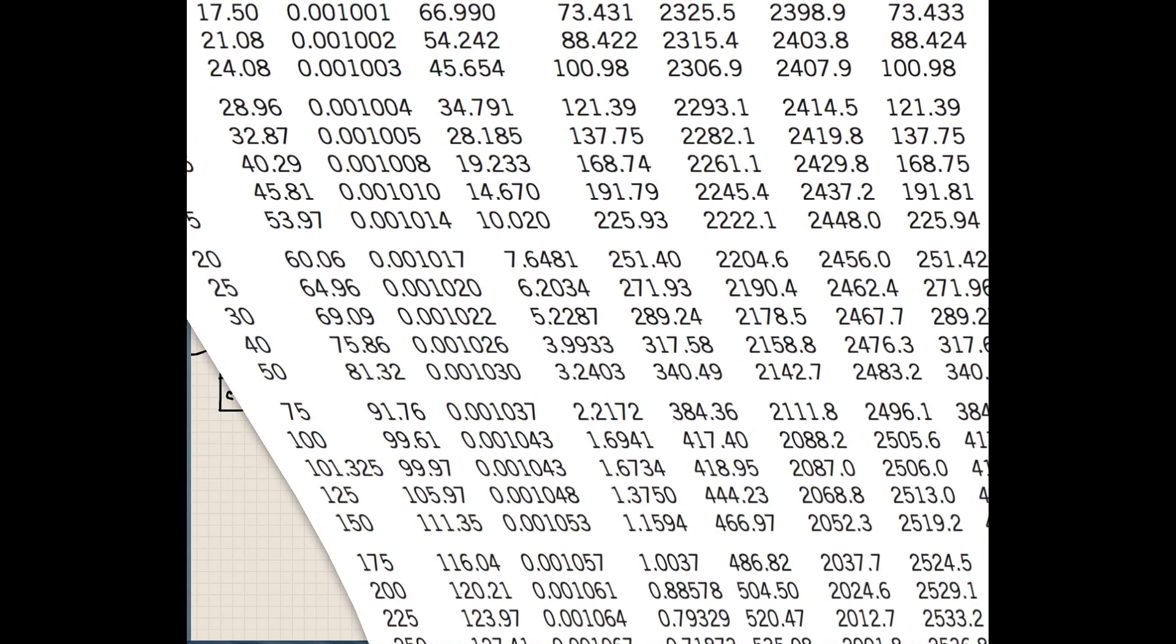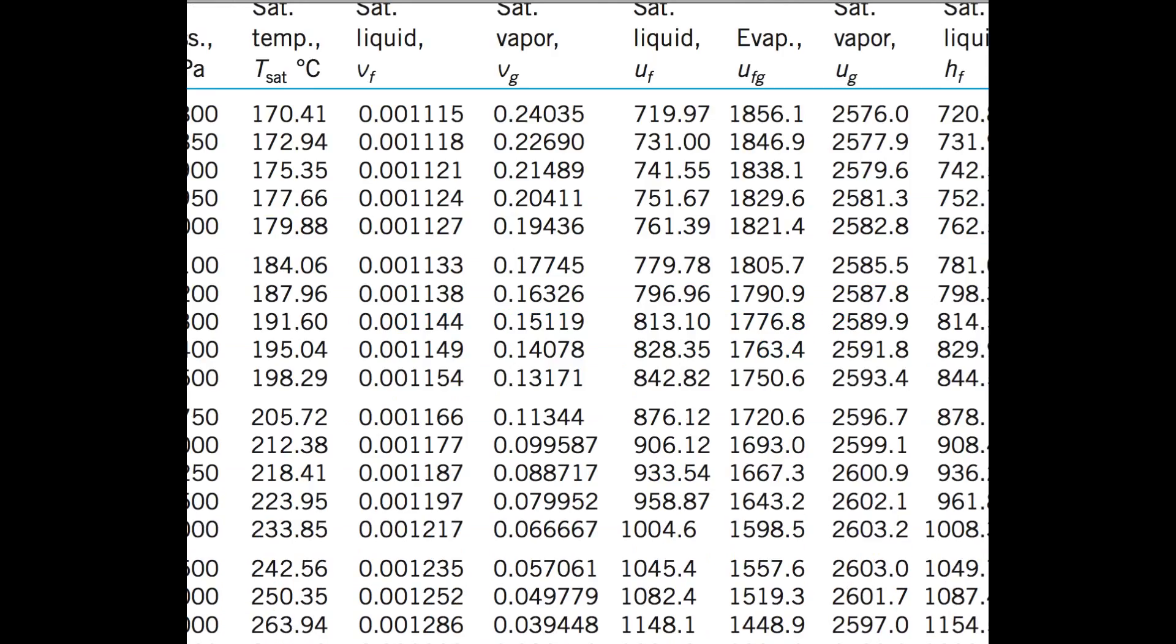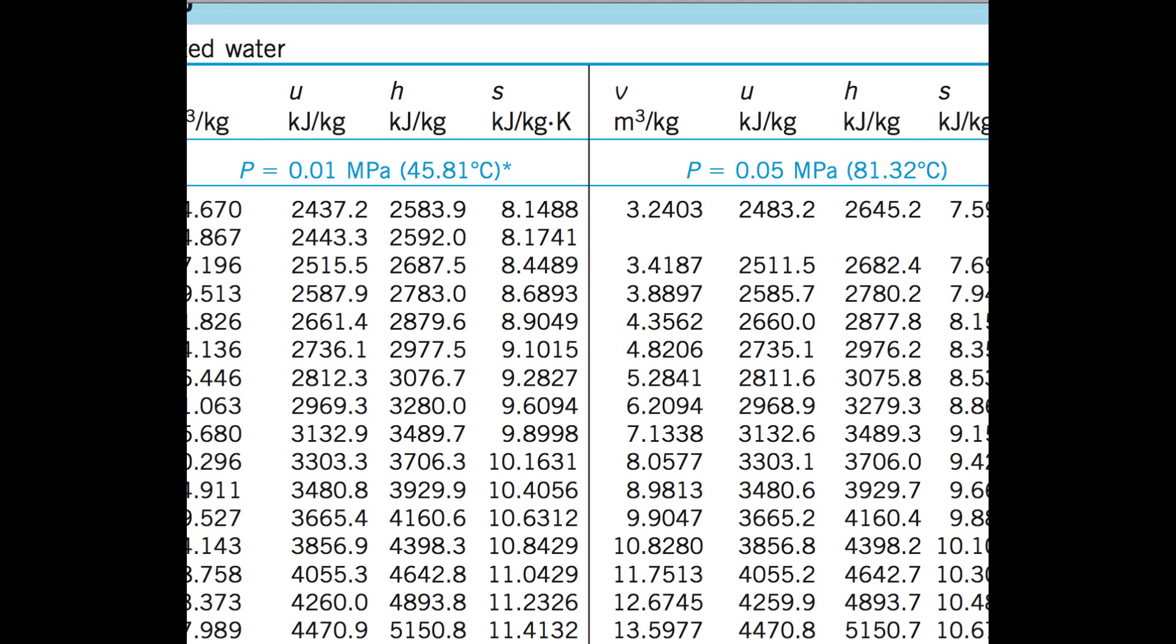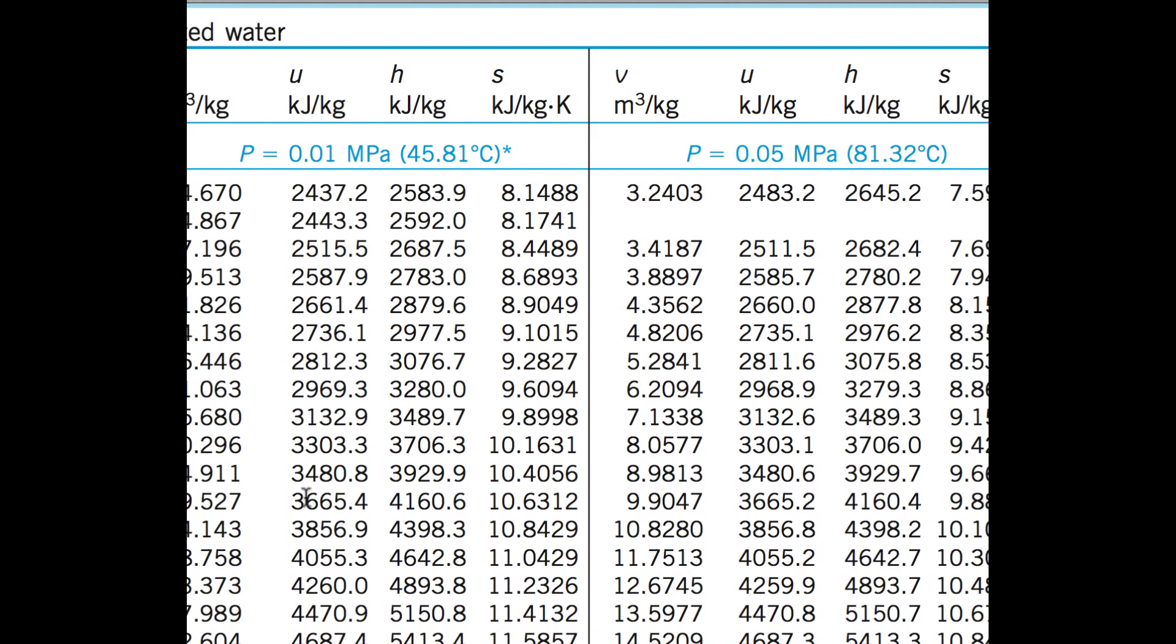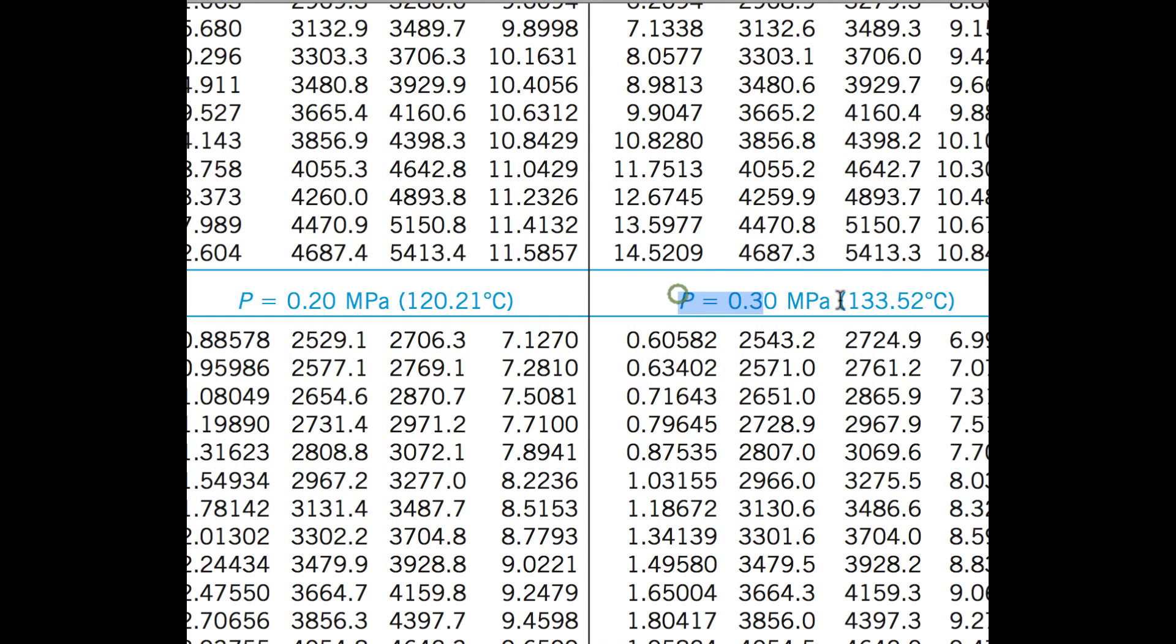All right, so let's go here. So 300, pressure stayed the same, and we know that anything above this temperature, it would be a superheated vapor. Think back to our temperature, pressure, volume diagram. Well, I'm not going to go through that anymore. I'm going to assume that you know how to do that. I'm going to go straight to these superheated water tables, and I'm going to look at 300 kilopascals, which is 0.3 megapascals here.